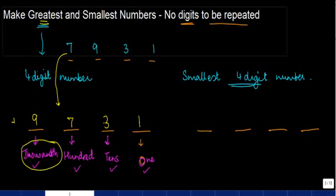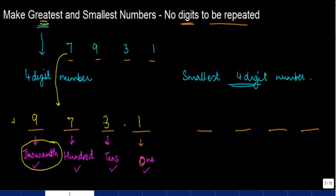So using the four digits seven, nine, three, and one, the greatest number we can form is nine thousand seven hundred thirty-one. The process: pick up the largest digit and put it at the beginning — the thousands place — then put the second largest in the second place, third in the third, and fourth in the fourth. You can try as many combinations as you want but you will not get a number greater than this using these four digits.